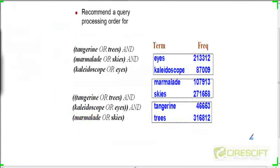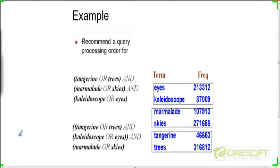So here is an exercise. Can you recommend a query processing order for this particular query: tangerine OR trees ANDed with marmalade OR skies ANDed with kaleidoscope OR eyes? And these are the document frequencies of each of the six terms. So how do you decide which pair of terms to take the AND operation of?